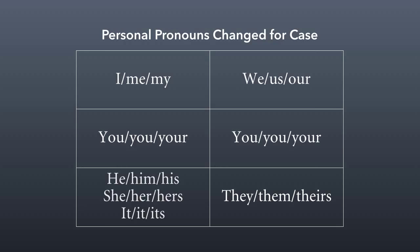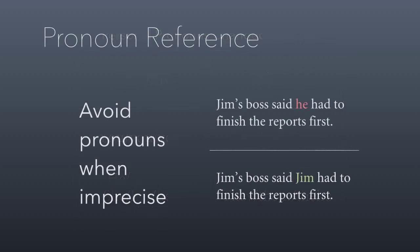You might wonder why you're learning this — it's because it's helpful for understanding common mistakes related to pronouns in English. For example, it's improper to use pronouns when they're not precise. 'Jim's boss said he had to finish the reports first' — we don't know if it's Jim or the boss who has to finish the reports. So we avoid the pronoun to add precision: 'Jim's boss said Jim had to finish the reports first.' Now we know it's Jim.